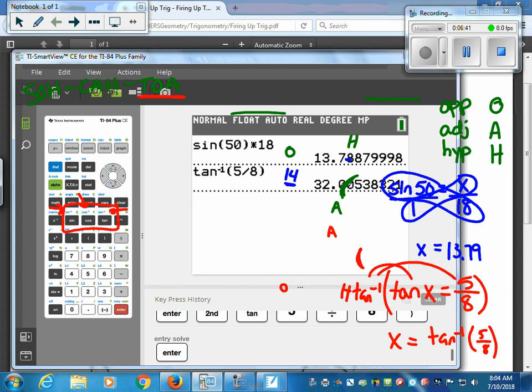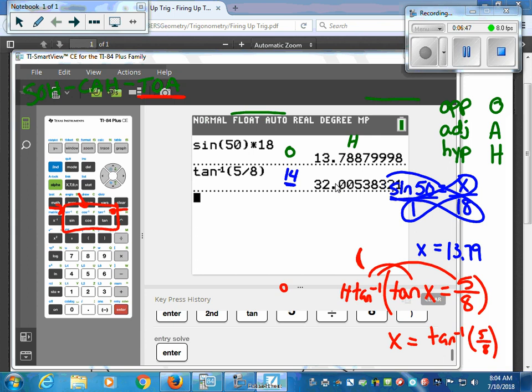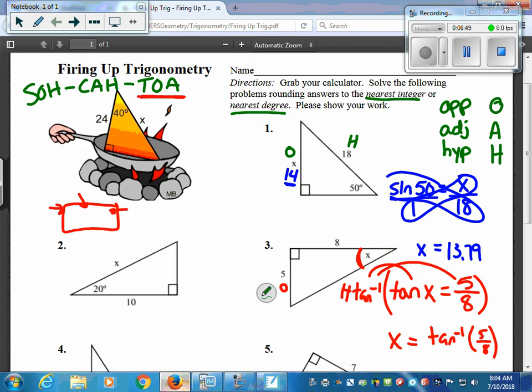And the answer we get is going to be a degree. So in this case, it said nearest degree, 32 degrees is going to be our value for X. So X equals 32 degrees.